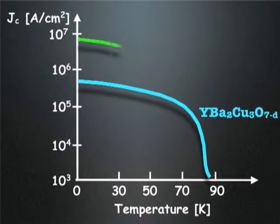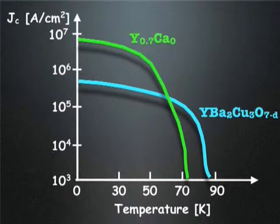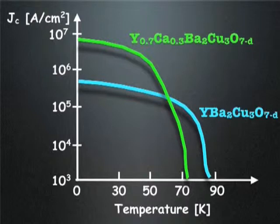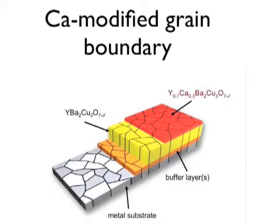But on the other hand, you reduce the critical temperature of the superconductor, and it's below 77 K, which is the appropriate temperature for the high-TC superconductors. We've overcome this problem of reduction of the critical temperature by introducing multilayers of undoped and doped material.